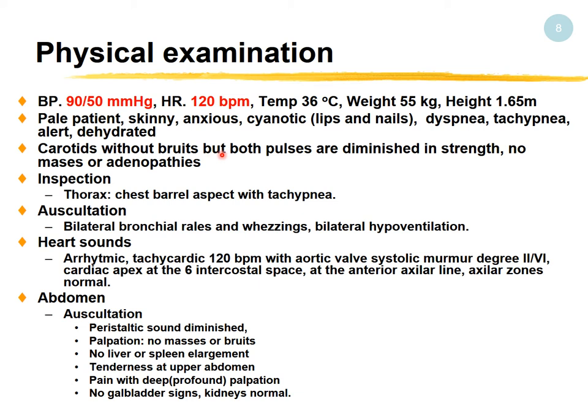Carotid pulses diminished in strength, no masses or adenopathies. Thorax shows a barrel-chest aspect — emphysema with tachypnea. Auscultation: bilateral crackles and bilateral hypoventilation, consistent with COPD. Heart sounds: arrhythmic, tachycardic, with an aortic systolic murmur grade 2/6. Cardiac apex at the 6th intercostal space and anterior axillary line.